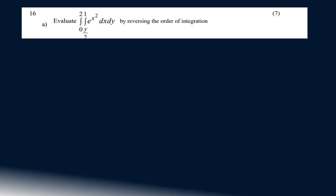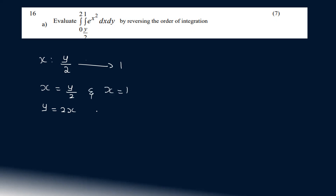So let's take a look at the range. x is in the range y/2 to 1. From x equals y/2, we get y equals 2x, and x equals 1. This is the condition for your graph.